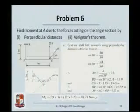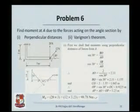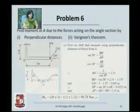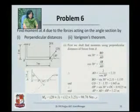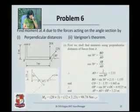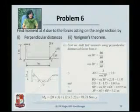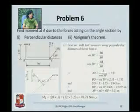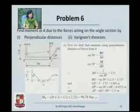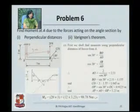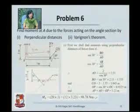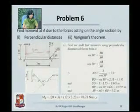Once again, an angle — the angle is AB and BC. At the end there are two forces: one is vertical, simple; the other one is inclined. In the first part, let us not use the Varignon's theorem and let us see how we can find out the moment about point A. For the 20 Newton force, it is simple because the perpendicular distance between A and the 20 Newton force is 3 meters. But finding out the perpendicular distance between the 12 Newton force and point A is going to be difficult because it is inclined.